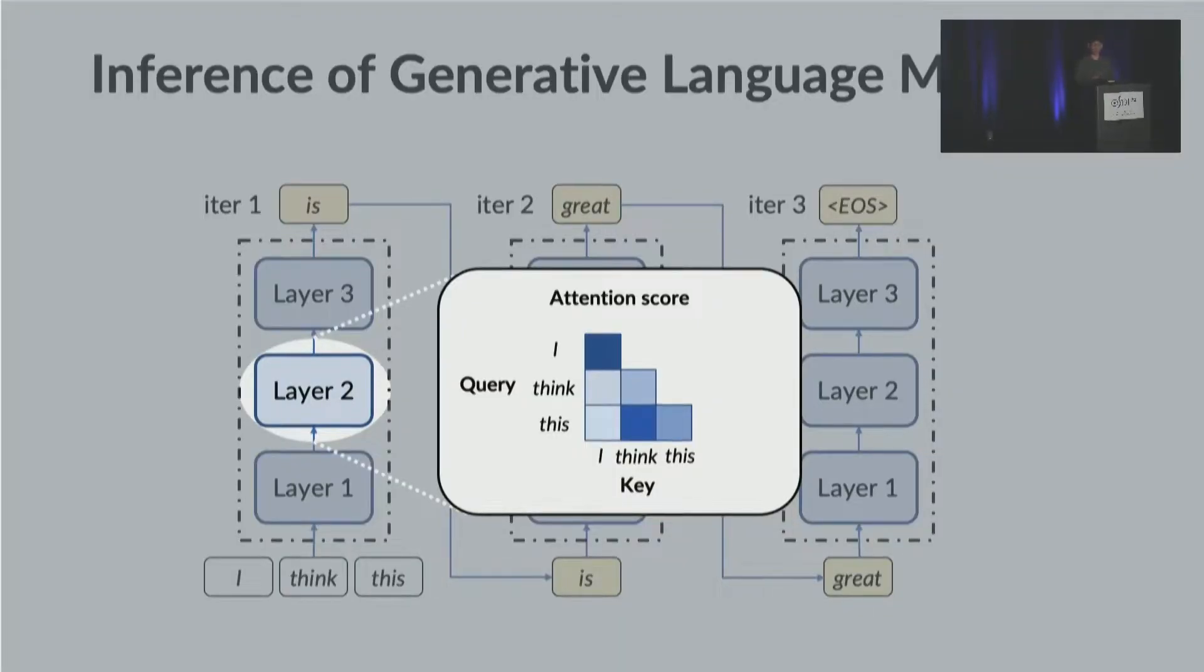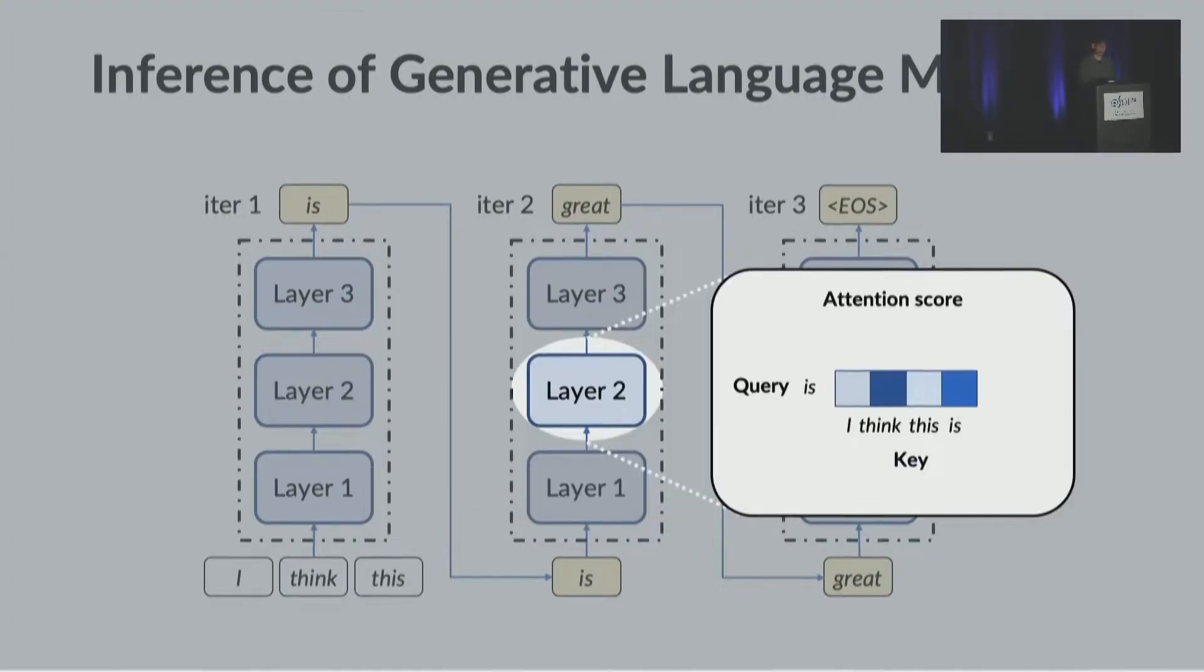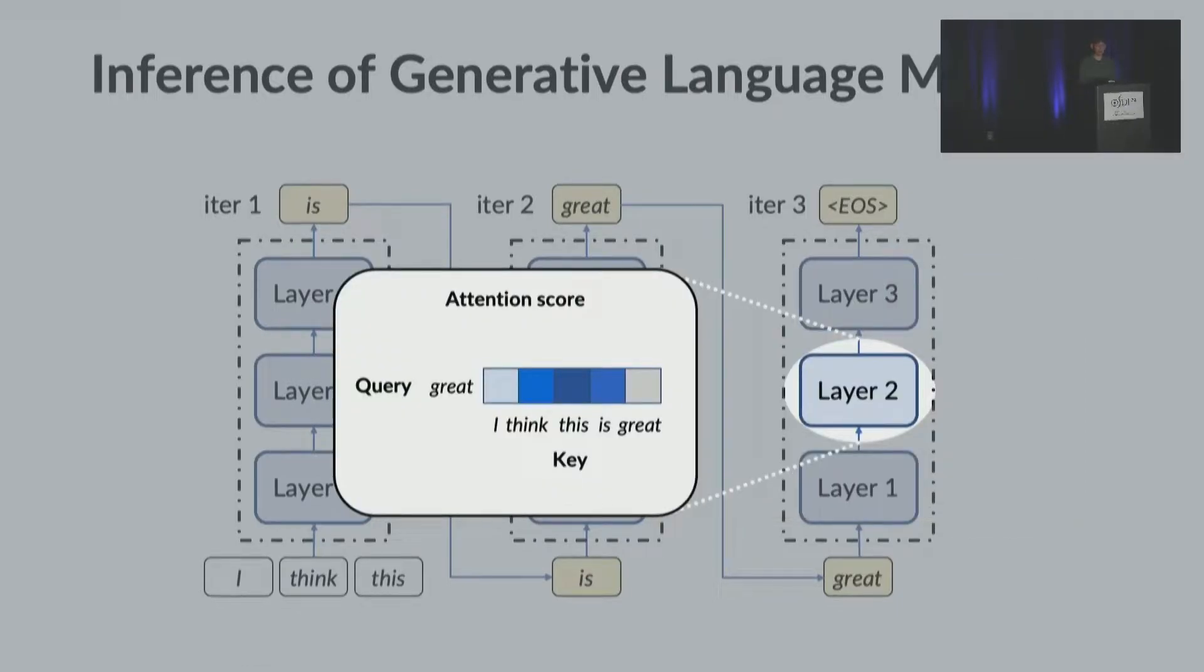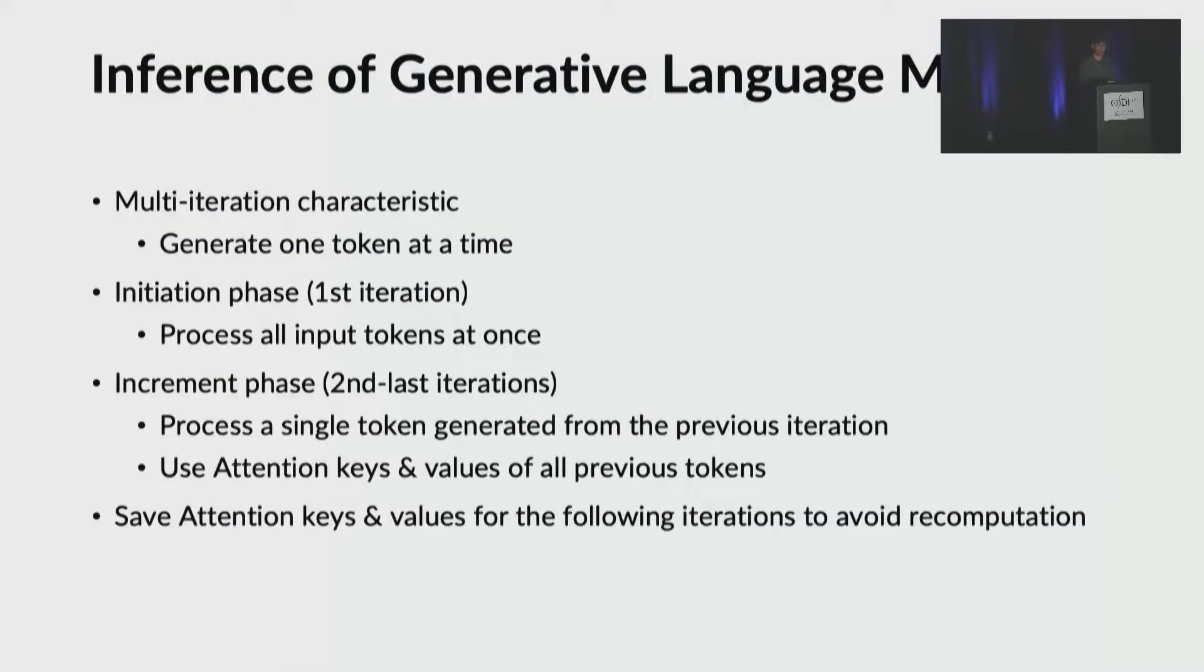Let's zoom into the transformer layer. The important operation of the transformer is attention. This operation is tricky to handle. The figure shows how an attention score between query and key is computed for the given input. In this case, attention scores of the three tokens, I think this, for the first iteration. For simplicity, we do not show the value part of the attention operation here. In the second iteration, the query is is, the keys are I think this is. We use cached attention keys and values for the tokens I think this. In the last iteration, the query is great.